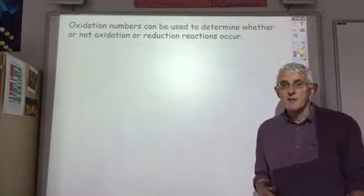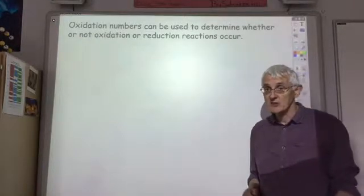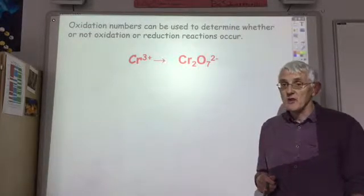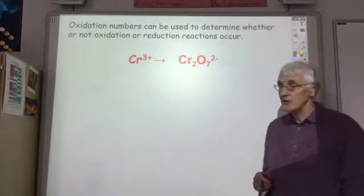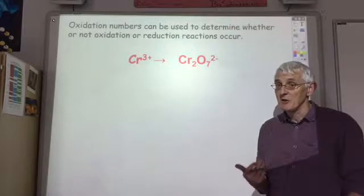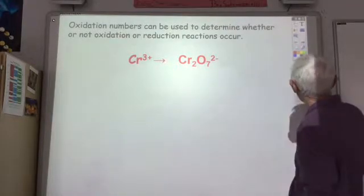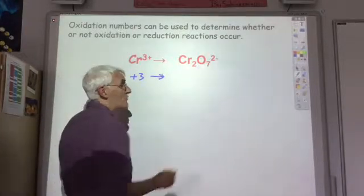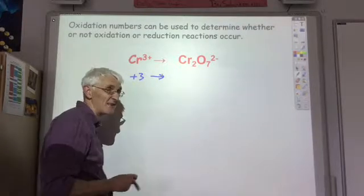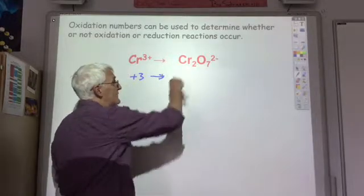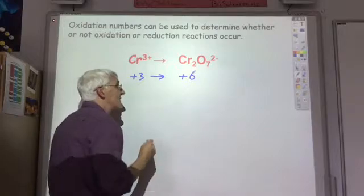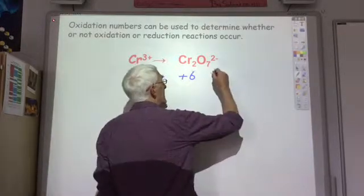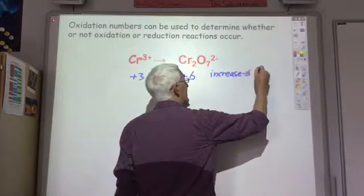Oxidation numbers can also be used to determine whether a reaction is an oxidation or reduction reaction. For example, looking at chromium 3+ being changed into the dichromate ion, Cr2O7 2-. Chromium 3+ has an oxidation number of plus three. In dichromate, the overall charge is minus two and there are seven oxygens giving minus fourteen, so the chromium must total plus twelve — with two chromium atoms, each chromium is plus six. The oxidation number has increased, so this is an oxidation reaction.